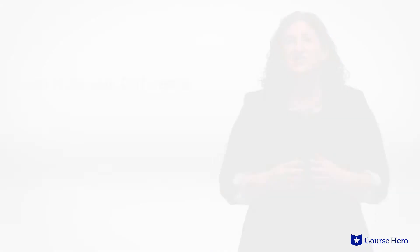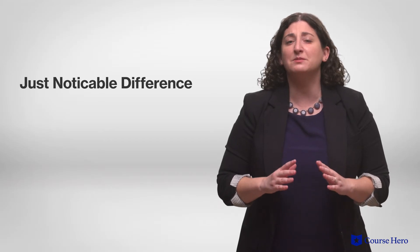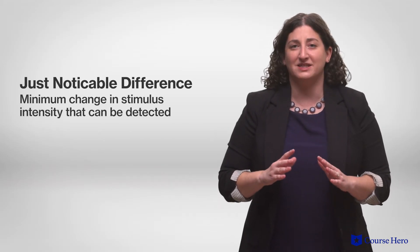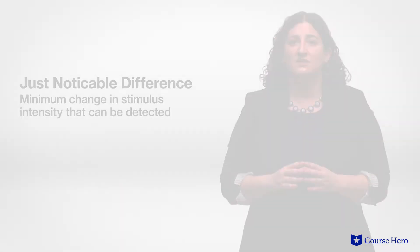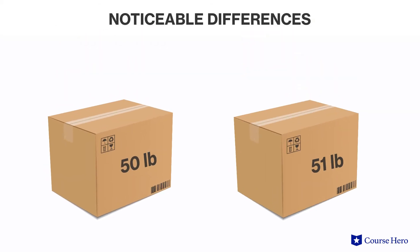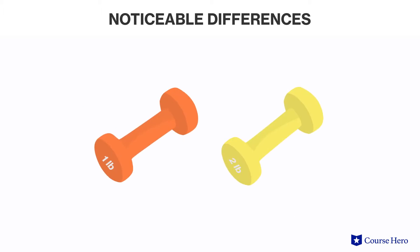The just noticeable difference is the minimum change in stimulus intensity that can be detected. For example, it would be difficult to tell the difference between a 50-pound weight and a 51-pound weight, but relatively easy to tell the difference between a one-pound weight and a two-pound weight.